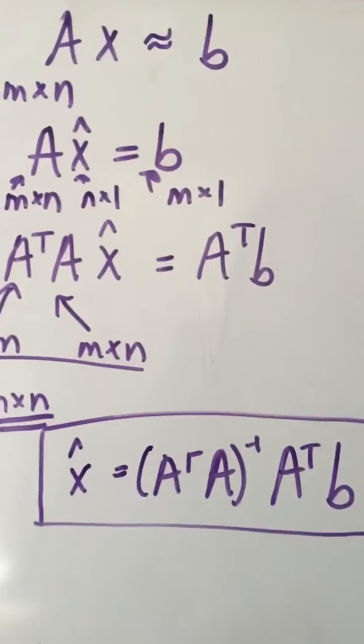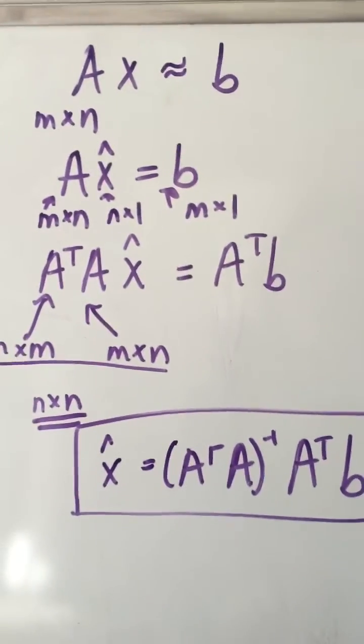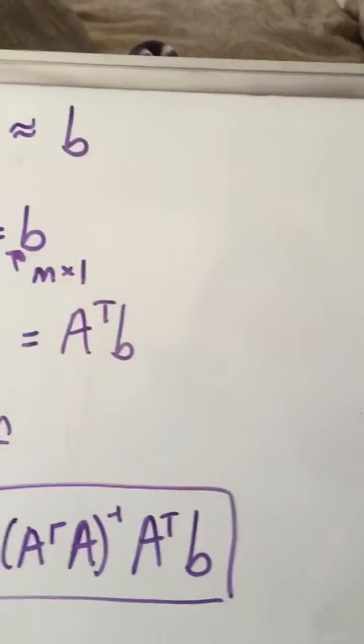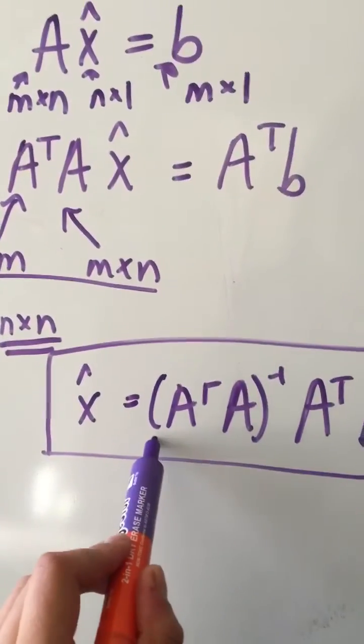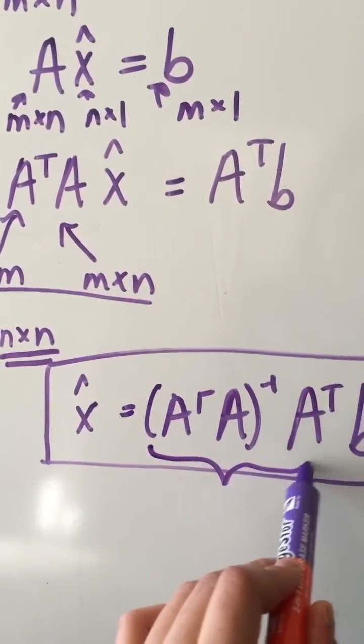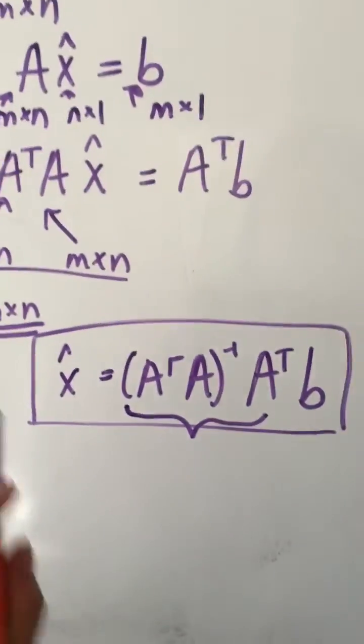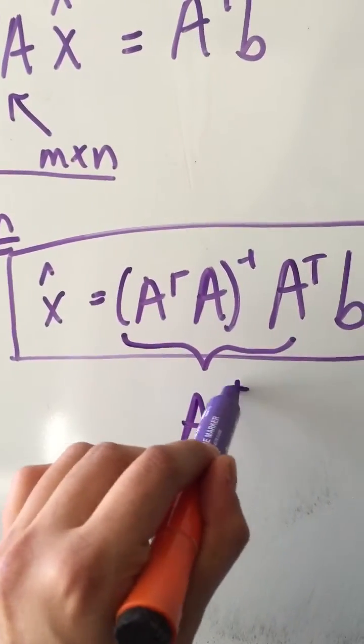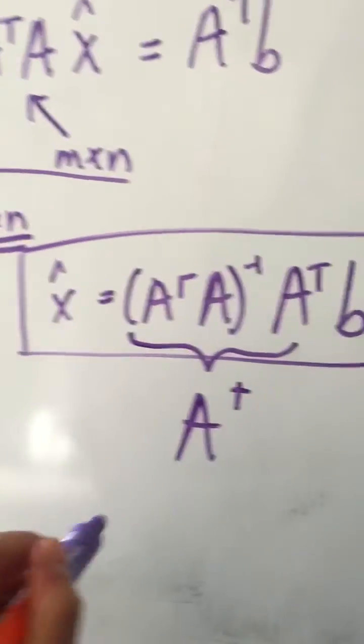And this is the equation we can use to solve the least squares problem to obtain an approximation and this portion of our equation is also known as the pseudo inverse denoted by A dagger.